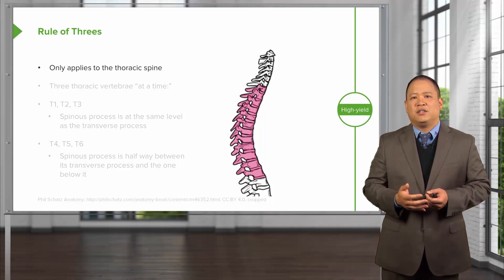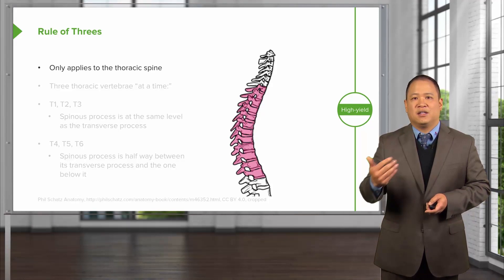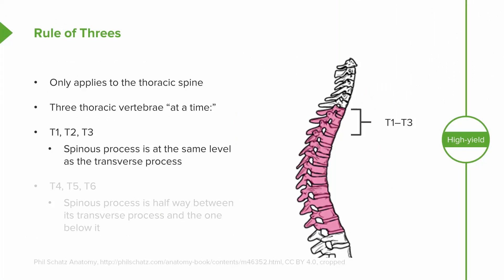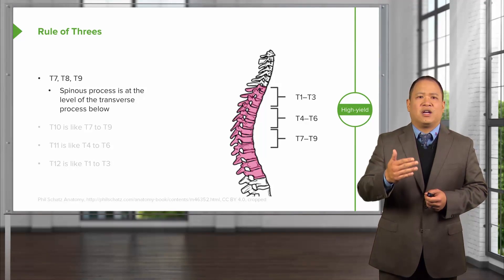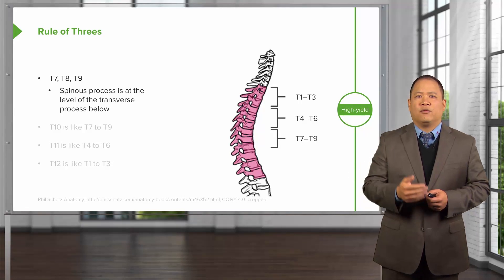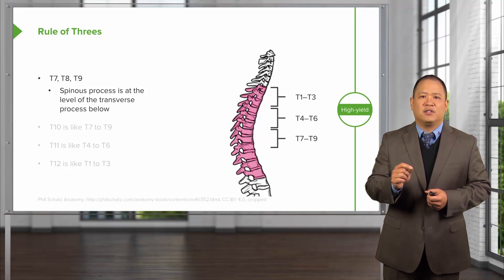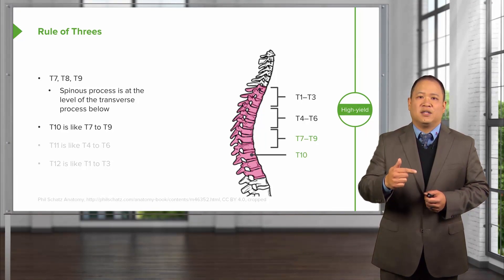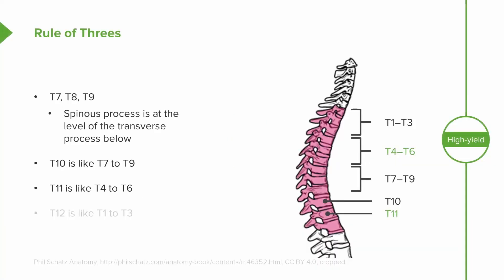The rules of three help us find where we are in the spine based on the spinous process and transverse process relationship, looking at three thoracic vertebrae at a time. From T1 to T3, the spinous process is at the same level as the transverse process. From T4 to T6, the spinous process shingles down inferiorly — it's halfway between the transverse process of that level and the one below it. From T7 to T9, the spinous process is at the level of the transverse process below it. For example, the spinous process of T7 is found at the level of the body of T8. T10 functions like T7–T9, so its spinous process is found at T11. T11 is more like T4–T6, so its spinous process is found halfway between T11 and T12.